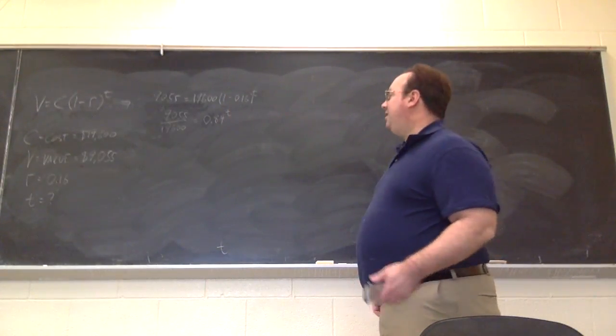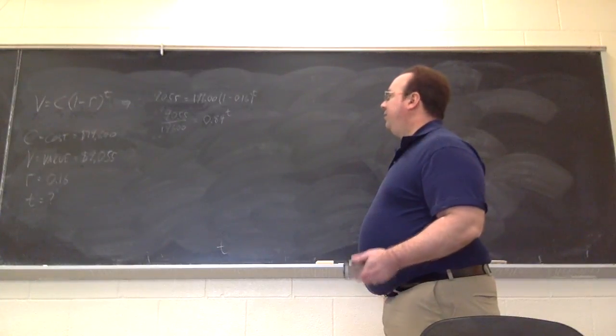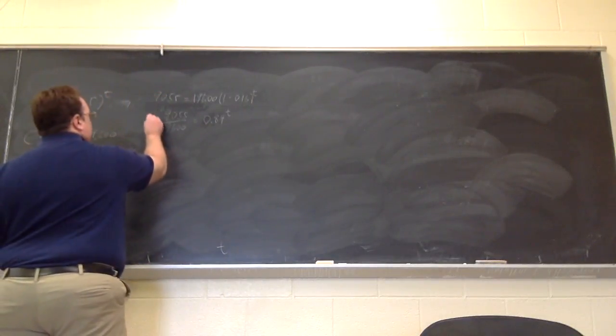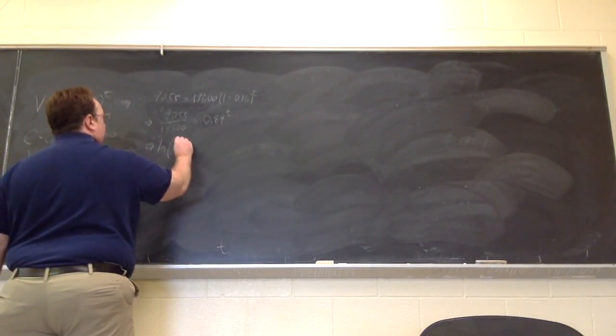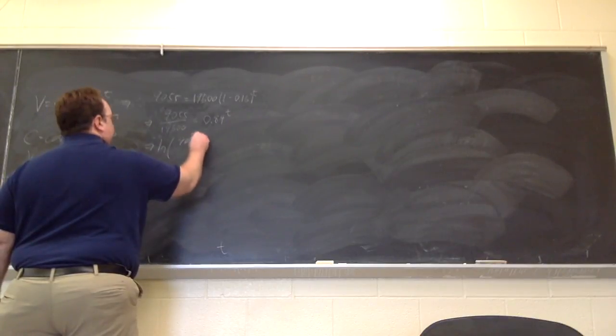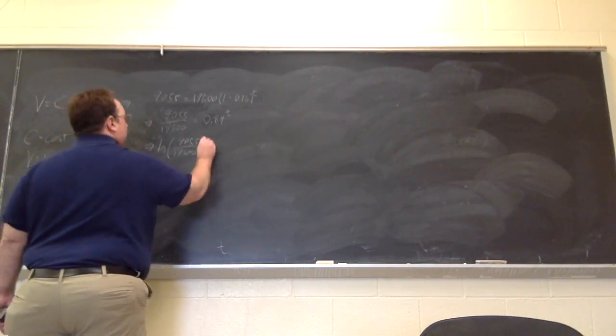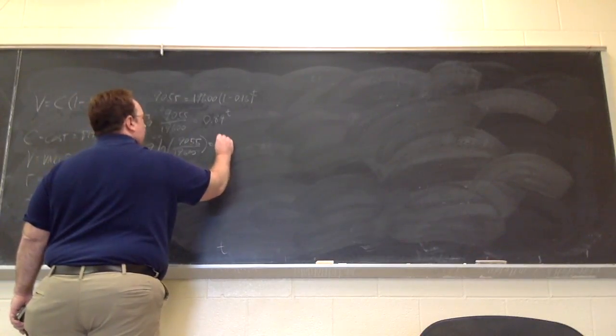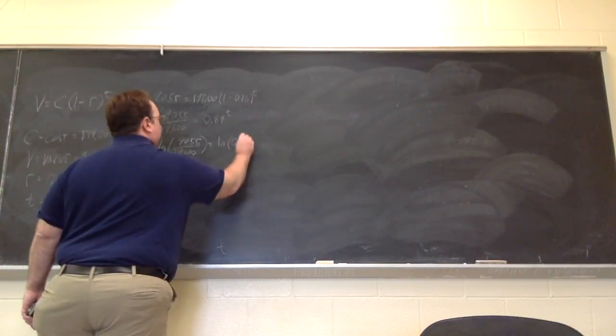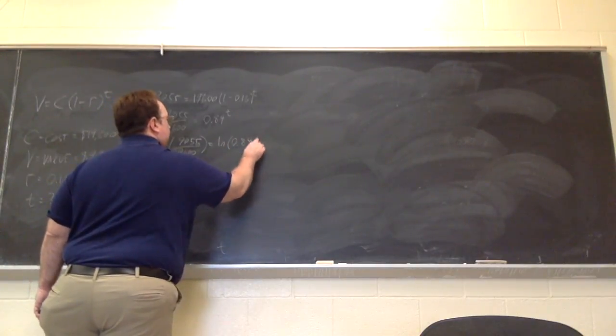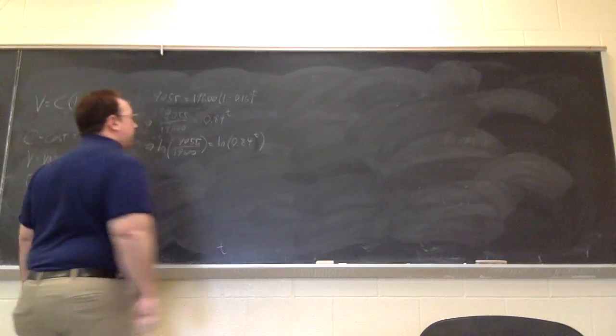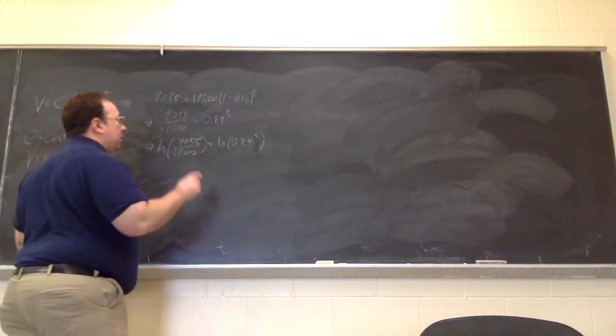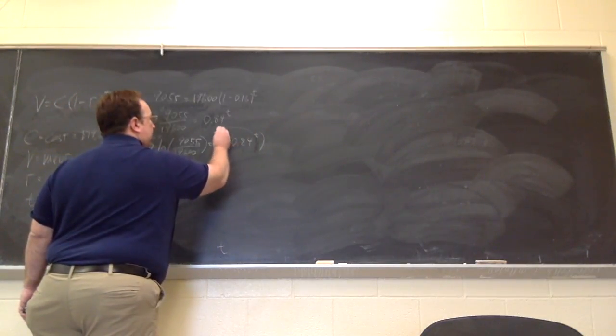Now to be able to isolate t, I need to use the natural logarithmic function. So I take the natural logarithm of both sides. So I have natural log of 9,055 over 19,600 is equal to natural log of 0.84 raised to the t power. Now, I can use one of the properties of natural logs, that the log of a number raised to a power is equal to that power times the log of that number. In other words, I can pull the exponent down.